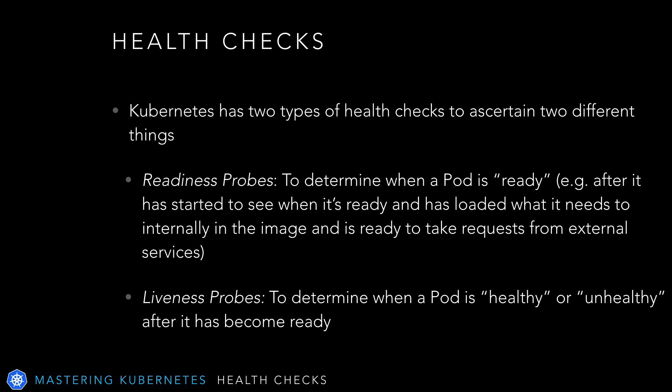Kubernetes has two types of health checks to ascertain two different things. First, Kubernetes uses readiness probes — what they sound like — to determine when a pod is ready. After it has started the container, it can use a readiness check to ensure that container is ready for work. Liveness probes determine when a pod is healthy or unhealthy after it has become ready.